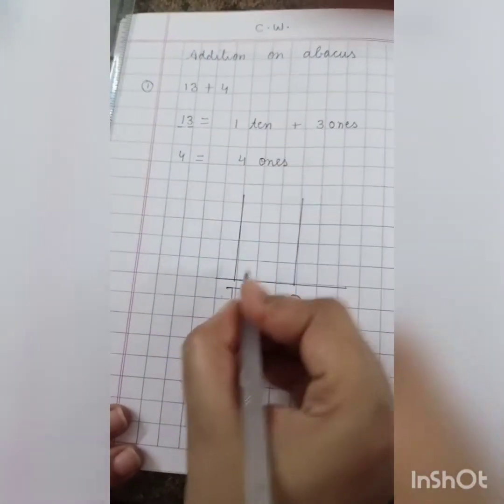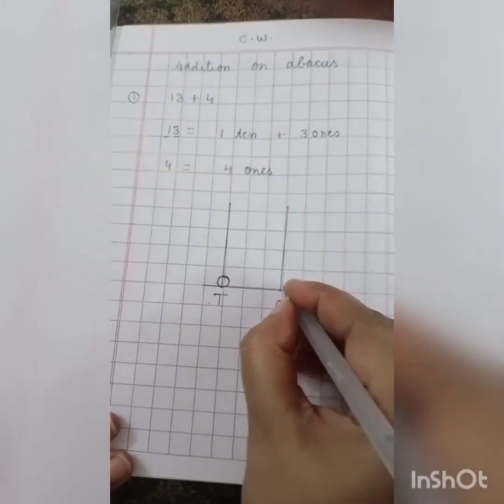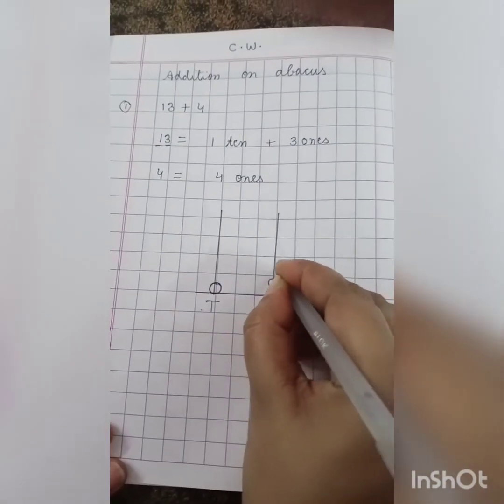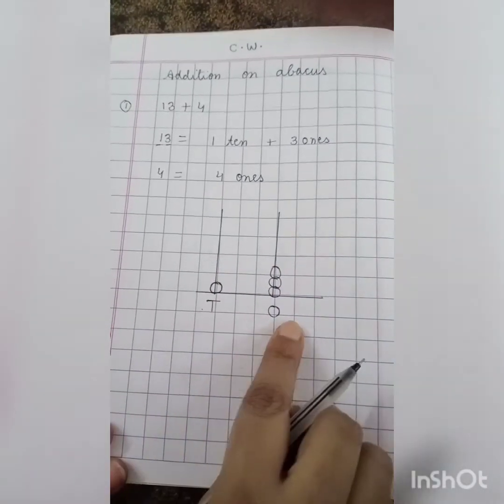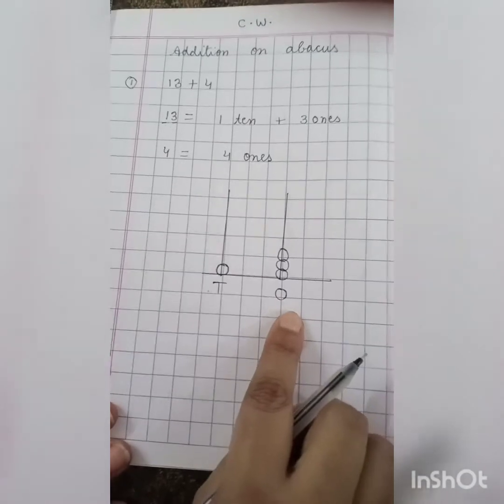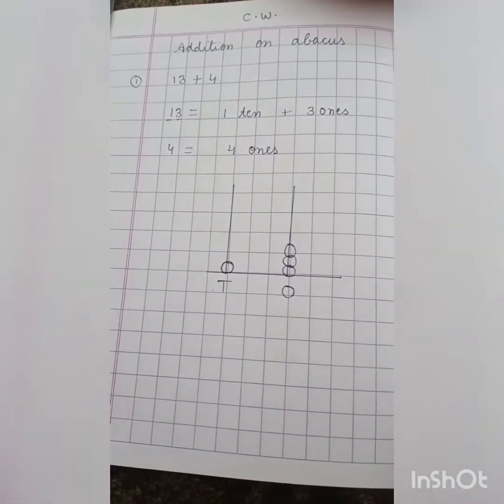So 1 ten, so 1 ball on ten spike. Then 3 balls on one spike, 1, 2 and 3. So what does this abacus represent? Number 13, 1 and 3, 1 on ten spike and 3 on one spike.